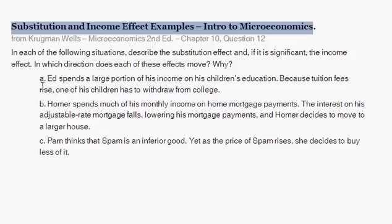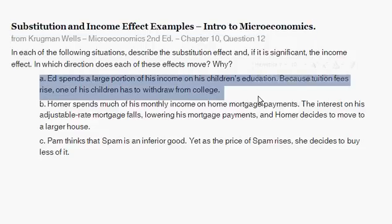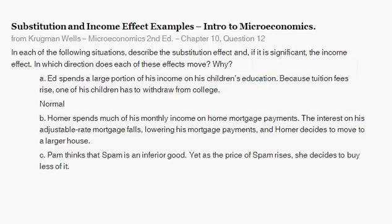Part A: Ed spends a large portion of his income on his children's education. Because tuition fees are on the rise, one of the children has to withdraw from college. Tuition is almost certainly a normal good — a good that, as income rises, one increases one's consumption of. With tuition higher, Ed has an incentive to substitute away from spending on his children's education to other goods. That effect is the substitution effect.